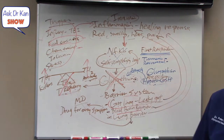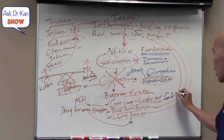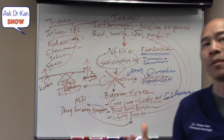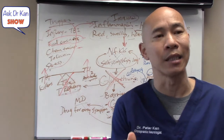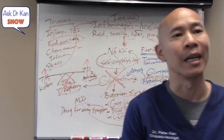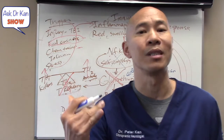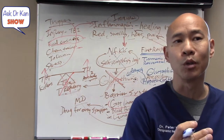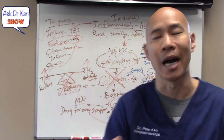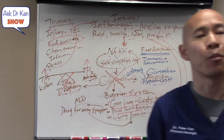For gut lining compromise — if you have leaky gut — we use a product called GI Resuscitate. This contains L-glutamine, which is the main amino acid for enterocytes — the cells in your intestinal lining — to help regenerate themselves. It also contains deglycerized licorice root to decrease gut inflammation, marshmallow root, okra extract, and aloe extract — mucilaginous substances that coat the gut. This is our number one product to help with leaky gut.